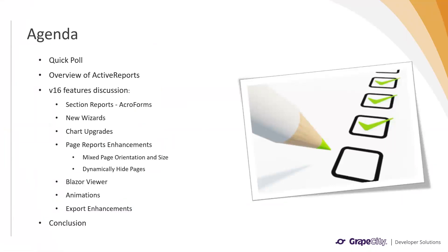First, we're going to do a quick poll so we know our audience. We'll go over some basics of Active Reports and then get into the features of V16 — namely, section reports and creating AcroForms, using the new chart wizards and data wizards, chart upgrades, and page report enhancements. We'll talk about the difference between section reports, page reports, and RDL reports. We also have a new Blazor viewer, some animations, and export enhancements as well.